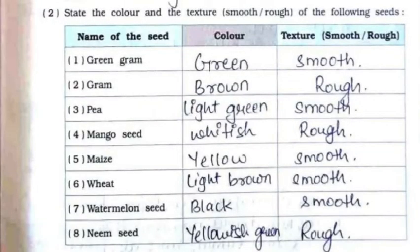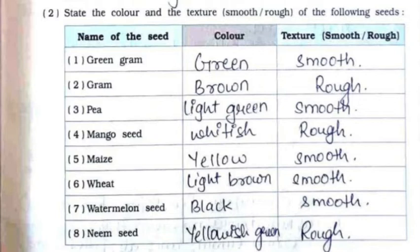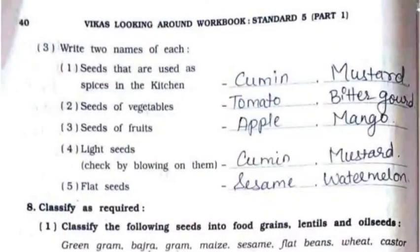Second: state the color and texture of the following seeds. Green gram — green color, smooth texture. Gram — brown color, rough texture. Pea — light green color, smooth texture. Mango seed — whitish color, rough texture. Maize — yellow color, smooth texture. Wheat — light brown color, smooth texture. Watermelon seed — black color, smooth texture. Neem seed — yellowish green color, smooth texture.